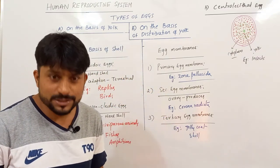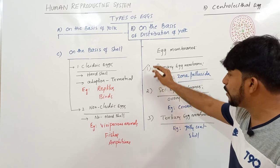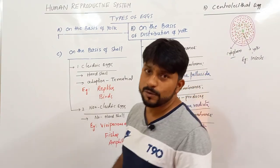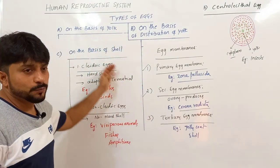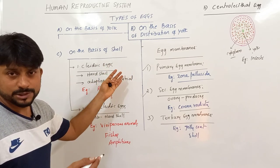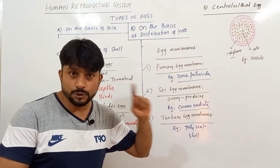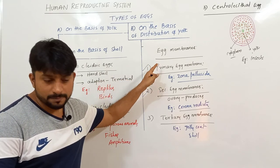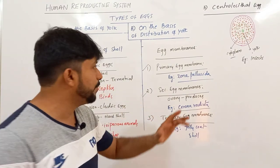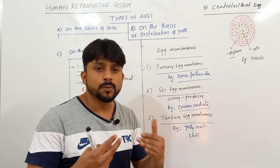Coming to human eggs: human eggs have both primary and secondary egg membranes. The primary egg membrane is called Zona Pellucida, produced by the ovum itself. The secondary egg membrane is called Corona Radiata, produced by the granular cells of the follicle. Human eggs are: number one, Alecithal eggs with negligible yolk; number two, Isolecithal type because yolk is equally distributed; number three, Non-cleidoic eggs. The membranes are Zona Pellucida as the innermost layer and Corona Radiata as the outermost membrane.